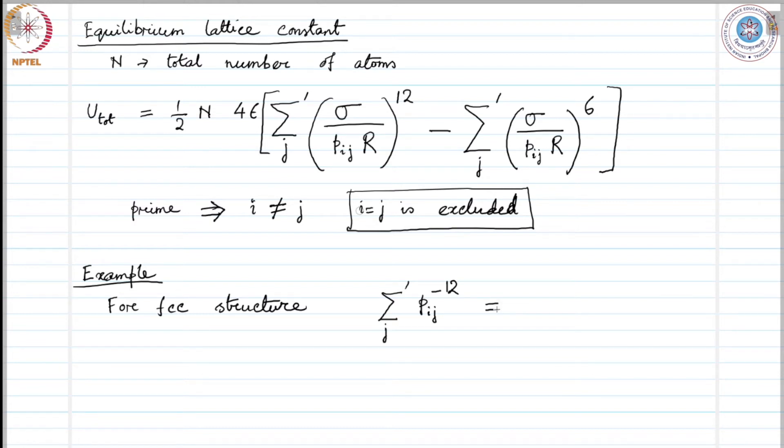Pij to the power minus 12, if we sum prime over j we will get 12.13188 for FCC structure. And if we perform the other sum, sum prime over j Pij to the power minus 6, that is going to give us 14.45392.